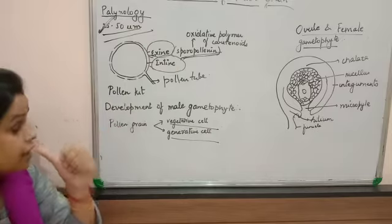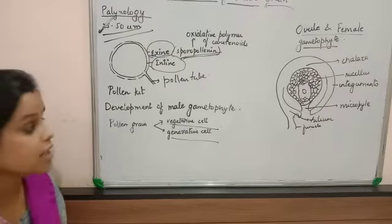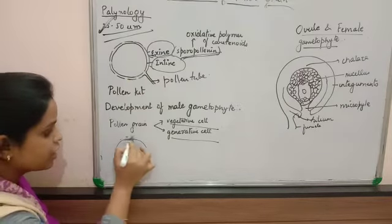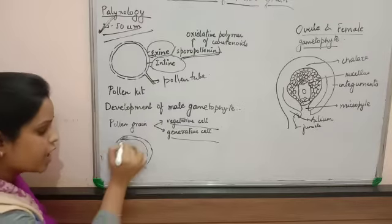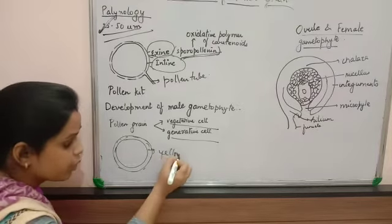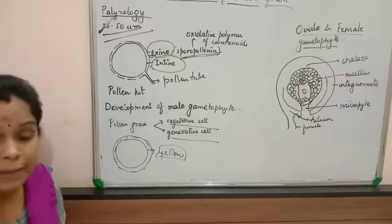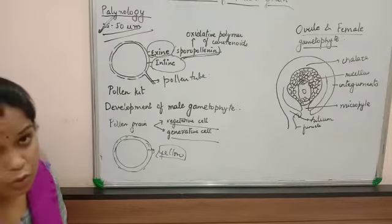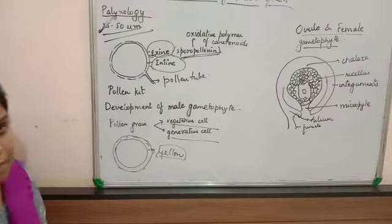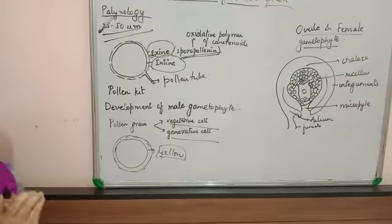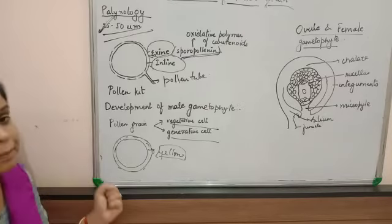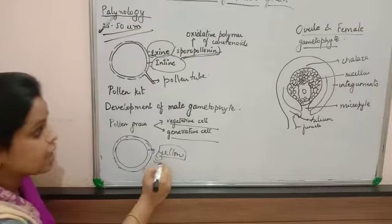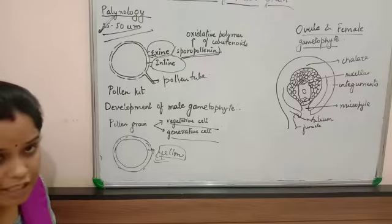Now we are looking at pollen kit. Pollen kit is actually a yellow-colored viscous, slightly sticky fluid that surrounds the pollen grains. This yellow fluid helps the pollen grains stick to insects, so insects like bees can carry pollen to other areas during pollination.